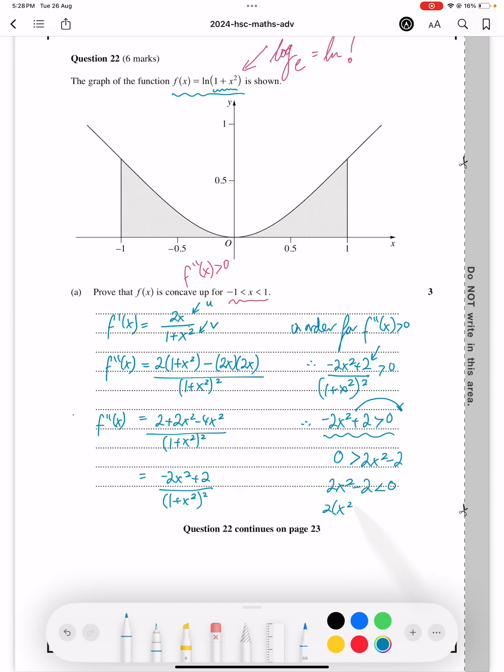If we take 2 out as a common factor, we get x² - 1. And so dividing everything by 2, we get x² - 1 is less than 0. Factorize that, we get (x - 1)(x + 1) is less than 0.